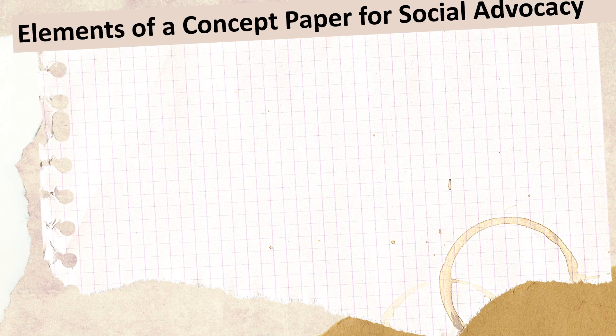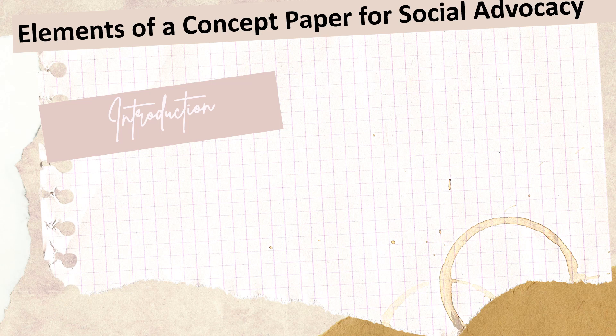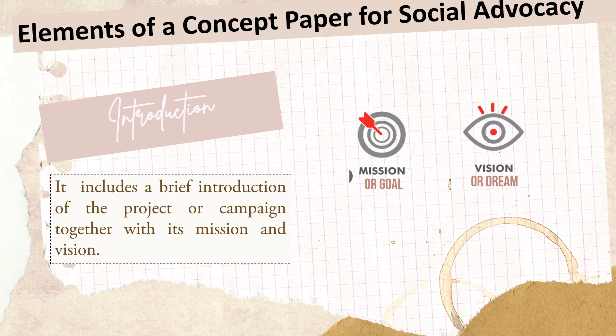Elements of a concept paper for social advocacy. The first element is introduction: the introduction is the most significant part of the concept paper that includes a brief introduction of the project or campaign together with its mission and vision. The introduction should provide a clear and concise overview of the social issue or problem that the advocacy project aims to address. It should explain why the issue is important and highlight the potential impact of the project.